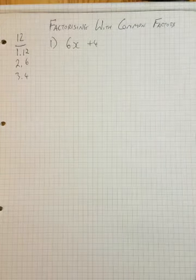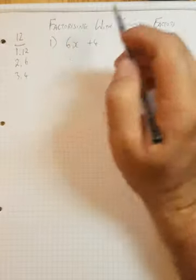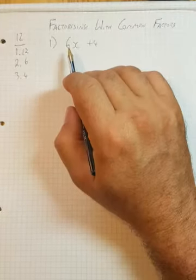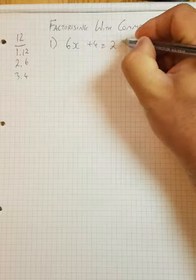So what number goes into 6 and 4? And whenever you're factorizing, always get in the habit of looking for the highest common factor, the biggest number that divides it. Alright, well, 1 would go into both of them. 1 is a factor of every number. But 2 is bigger. So what we could say is we could say 2 times...